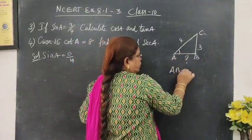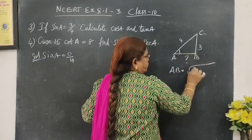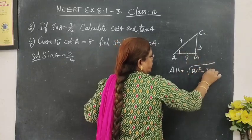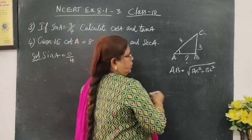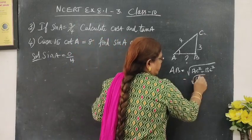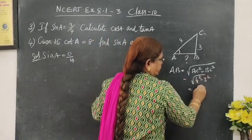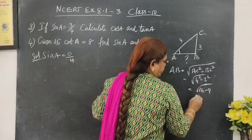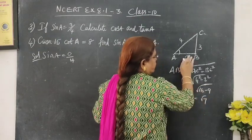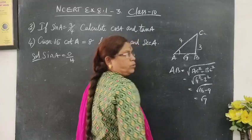So AB equal to root of hypotenuse squared minus BC squared. That is 4 squared minus 3 squared, 16 minus 9 equal to root of 7. So now this value is root of 7.